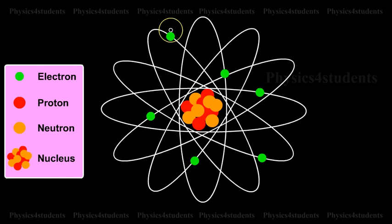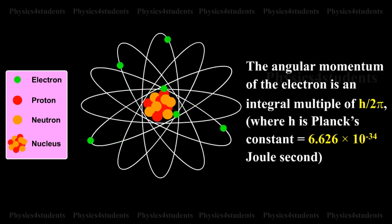An electron cannot revolve round the nucleus in all possible orbits. The electrons can revolve round the nucleus only in those allowed or permissible orbits for which the angular momentum of the electron is an integral multiple of h by 2π, where h is the Planck's constant that is equal to 6.626 × 10^-34 joules second.